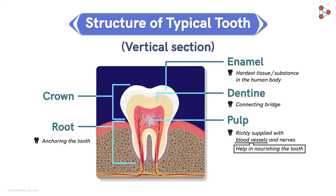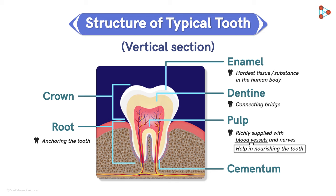Now, this part is called the cementum. Isn't the name self-explanatory? Yes, it acts like a tough layer that covers the complete root. As you can notice here, the structure widely spreads across the complete root of the tooth.